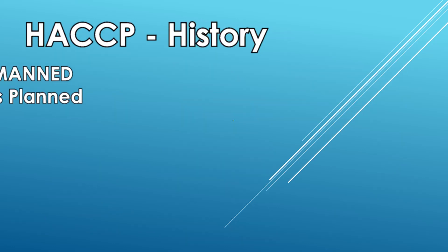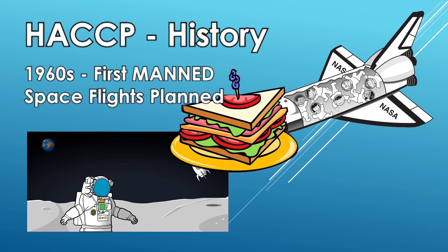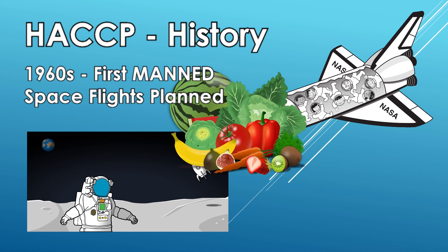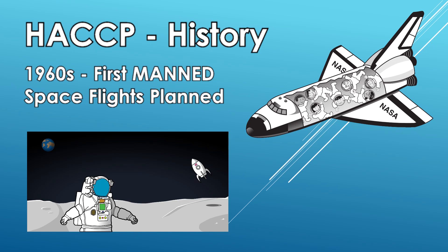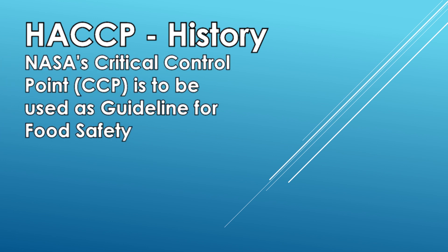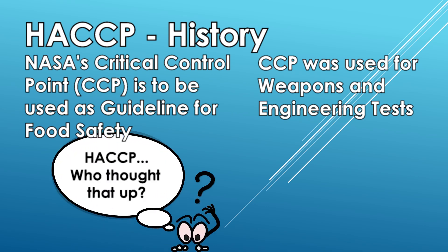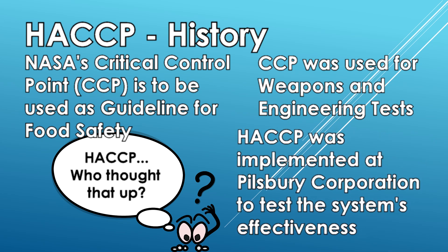HACCP originated in the 1960s where the National Aeronautics and Space Administration or NASA, the Pillsbury Company, and the U.S. Army Laboratories collaborated together to provide safe food for upcoming space expeditions. These groups came together to solve two critical problems facing NASA: cramps and disease-producing microorganisms or toxins. It was decided that NASA's engineering management requirements — critical control points — would be used as a guideline for this food safety initiative, and by using CCP, NASA and Pillsbury were able to identify and eliminate the critical failure areas in the food processing procedures. Thus, the first pathogen monitoring measurement requirement was imposed on food systems.